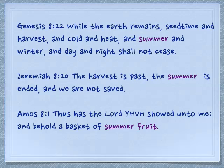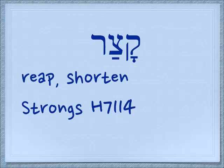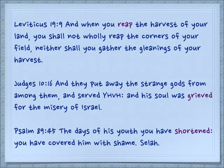Amos 8:1 — thus has the Lord Yehovah showed unto me, behold a basket of summer fruit. There is no word for fruit in this verse; the only word there is 'summer.' But you can't have a basket of summer, so you have a basket of summer fruit. Related to these words is the word 'katzar,' which is the action either of making something short or reaping something, in which case you shorten the plant to take in the harvest.